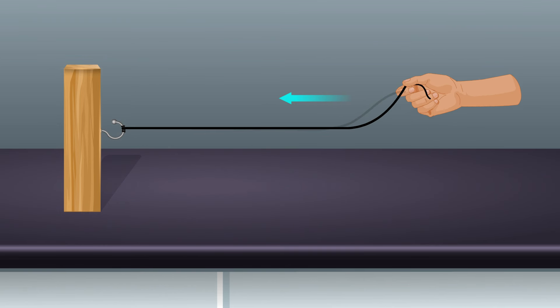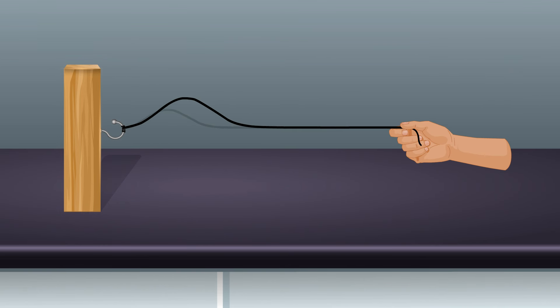Give a transverse horizontal jerk to the string and create a pulse. Observe what happens to the pulse at the fixed end.